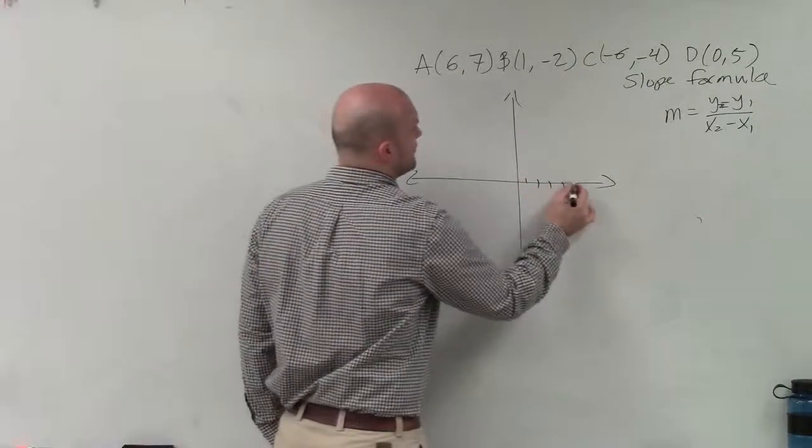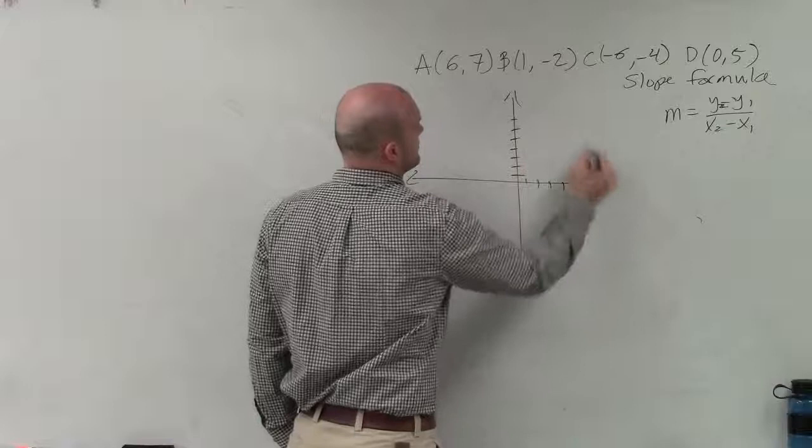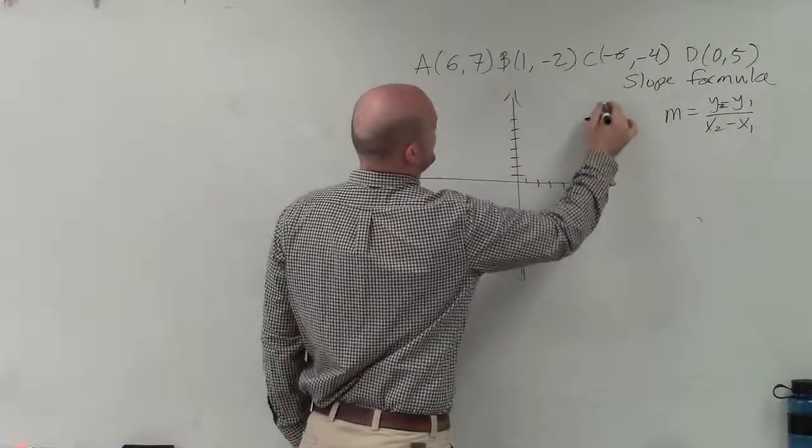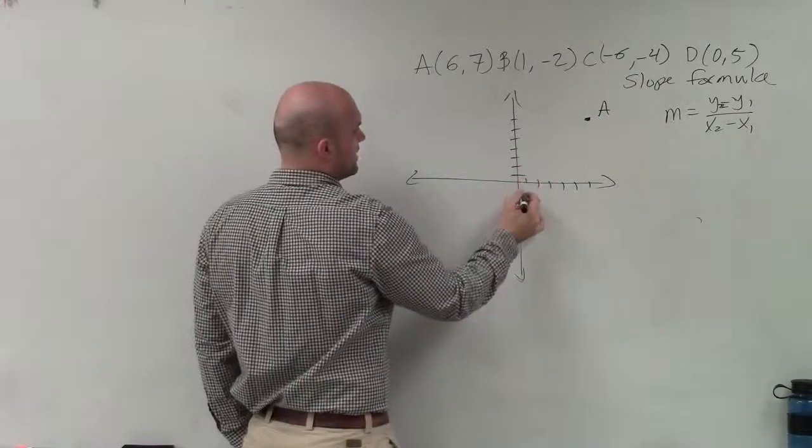Counting on the coordinate plane: 1, 2, 3, 4, 5, 6, and 1, 2, 3, 4, 5, 6, 7. So that's point A at (6,7). Point B is (1, -2).